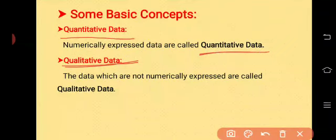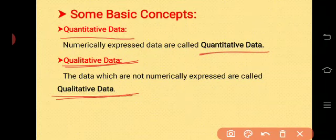The data which is not possible to express in terms of numbers is called qualitative data. In the previous classes we also studied what is meant by qualitative characteristics and quantitative characteristics.